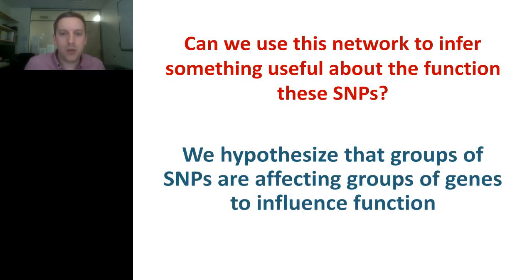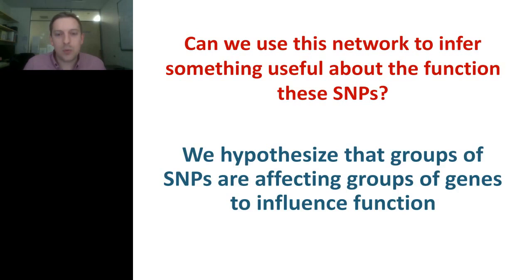We think this is a good analogy for GWAS SNPs in the context of our eQTL network. If there's a SNP that is so deleterious that it's disrupting hundreds of genes, then that's probably going to disrupt the cell sufficiently that it's not going to live long enough to divide — it will die and we will never observe it. So we've come to think of the GWAS SNPs as the bullet holes in the returning bombers. If the global degree is not the most informative measure, then we took a step back and asked: can we use this network to infer something useful about the function of these SNPs? Our hypothesis became that maybe it's groups of SNPs affecting groups of genes that influence function — it's not just one or two SNPs driving this, it's more this many-to-many connection.